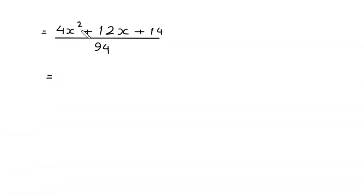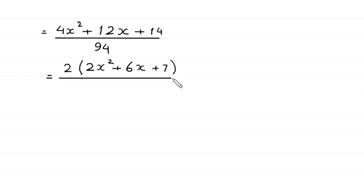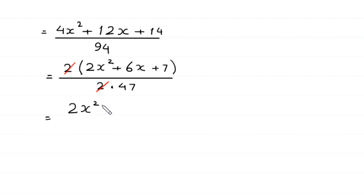Next, we factor out 2 as a common factor from the numerator, leaving 2 times (2x squared plus 6x plus 7). The denominator 94 can be written as 2 times 47. The 2 in the numerator cancels with the 2 in the denominator, leaving (2x squared plus 6x plus 7) divided by 47.